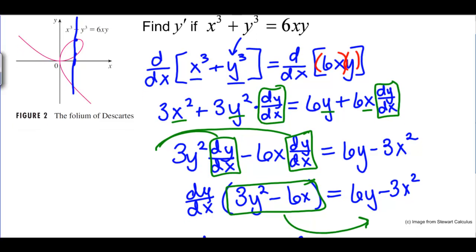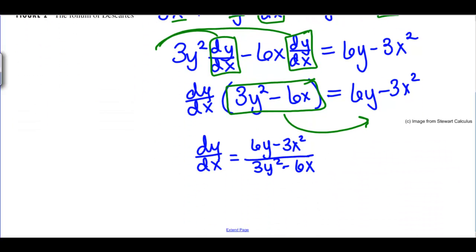Therefore, to specify a specific point on the curve of this Folium of Descartes we actually need to know both x and y.